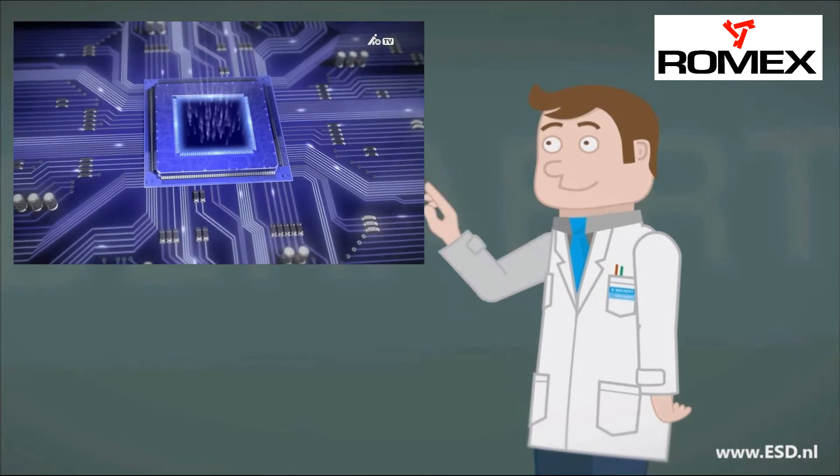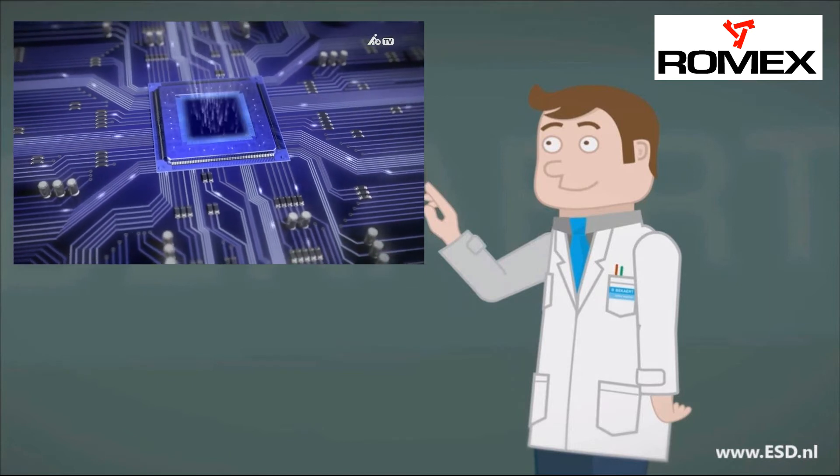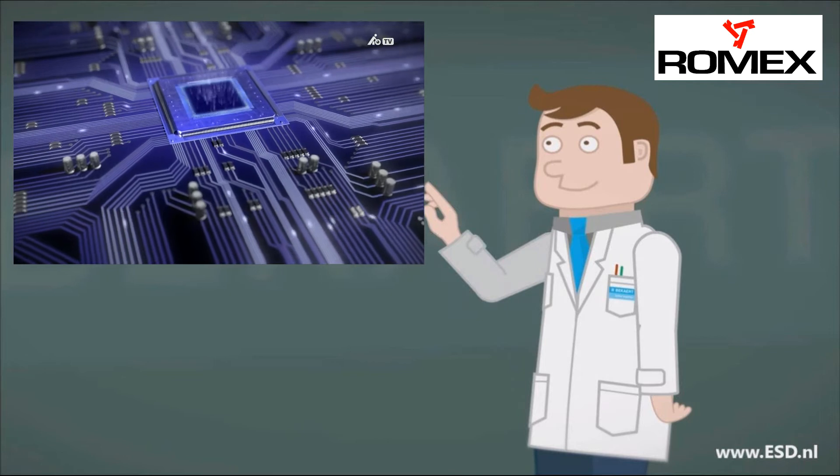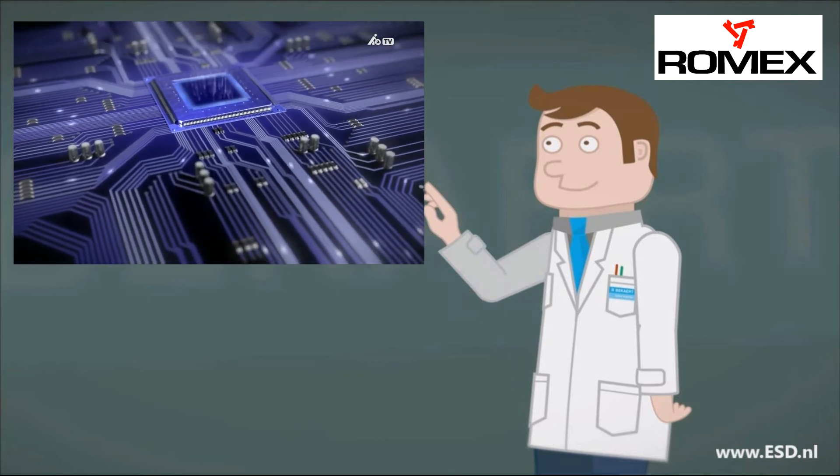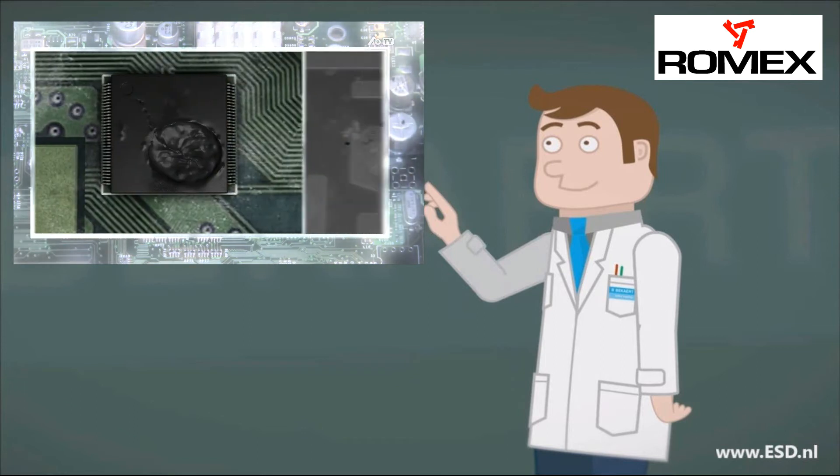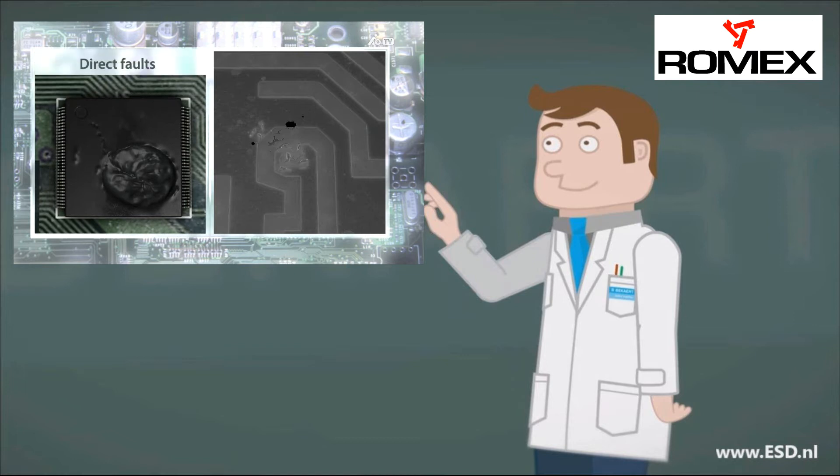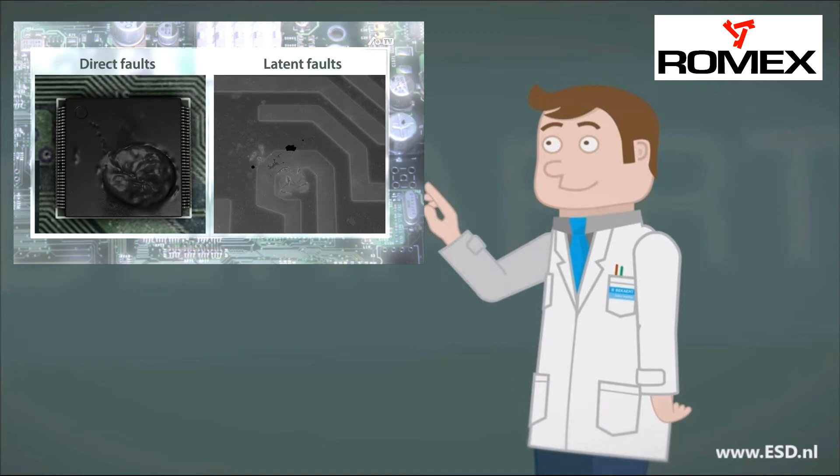The extremely thin conducting paths in active electronic components, like ICs, are often unable to withstand the high ESD voltages involved. Some of the damage sustained in this way is clearly visible, but some can only be seen under an electron microscope. These different types of damage are referred to as direct faults and latent faults.